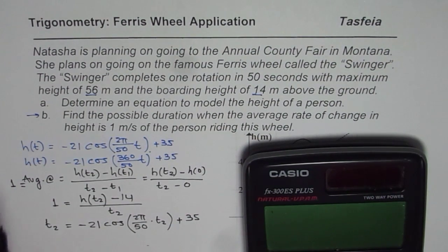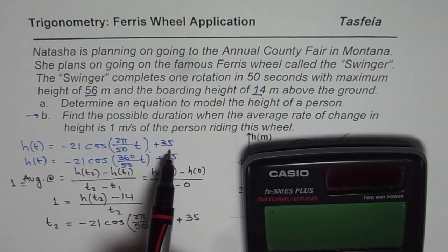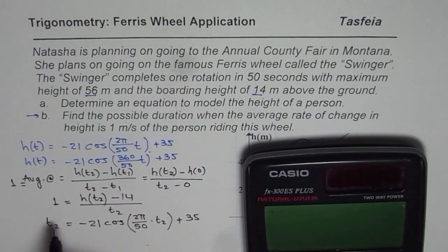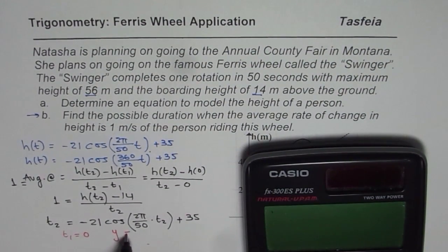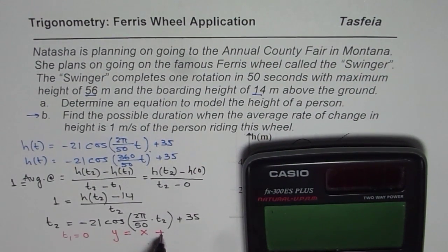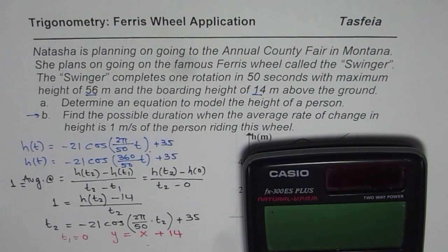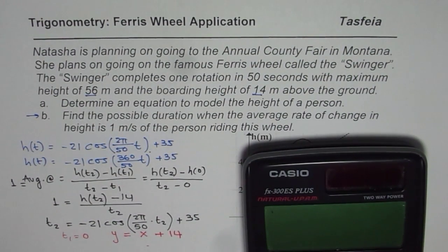Since the average rate of change is 1, I will sketch the graph of the function h(t) = −21·cos(2π/50·t) + 35, and draw a line with a slope of 1. Since I'm taking t₁ as 0 and the height at t=0 is the minimum of 14, the equation of my straight line will be y = x + 14. The points where this line crosses the graph will give me the two different time values where the average rate of change is exactly 1 meter per second.